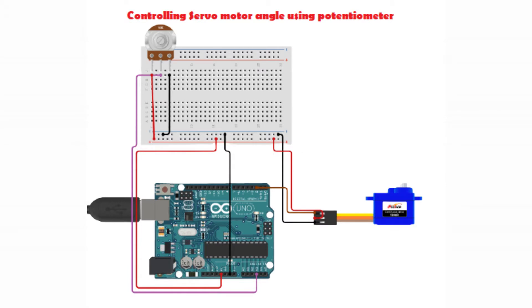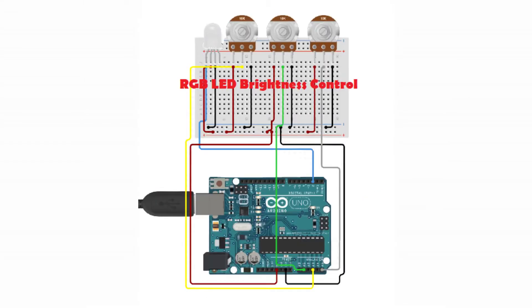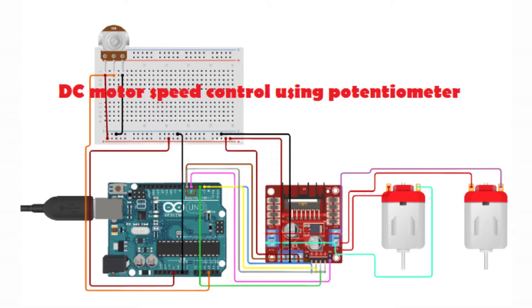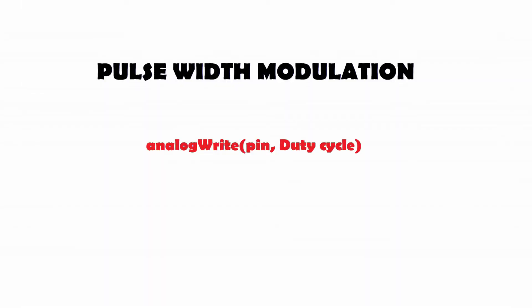The question is: what is pulse width modulation in Arduino? PWM pins can be used for several applications — we can control different components using them. In our previous video we turned an LED on and off using a digital signal, but if we want to control our LED's brightness precisely, we use analog output through pulse width modulation.